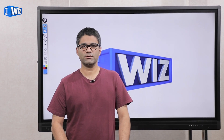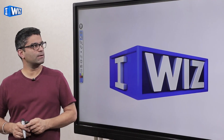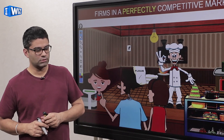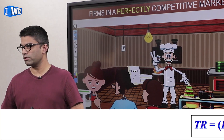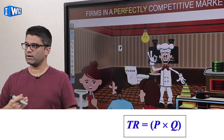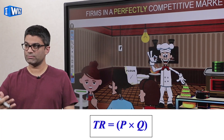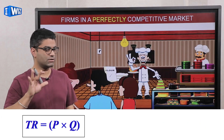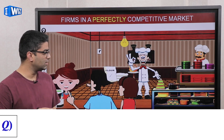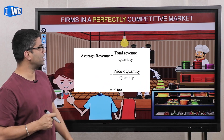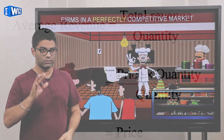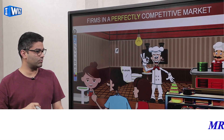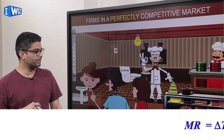Hey guys, hope you're ready to learn about how decisions are made in a perfectly competitive market. In the previous video we talked about marginal revenue, average revenue, and total revenue in relation to how much revenue a producer gets. Make sure you're comfortable with those three concepts and one very important conclusion: in a perfectly competitive market, price equals marginal revenue.